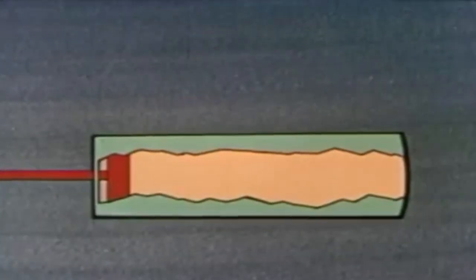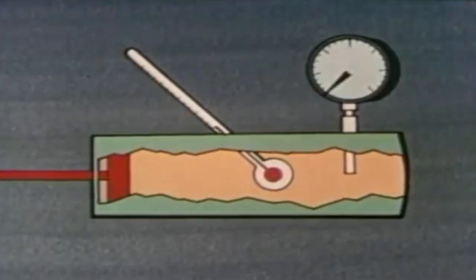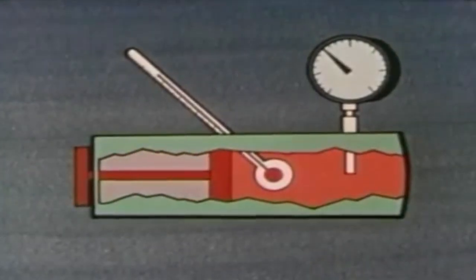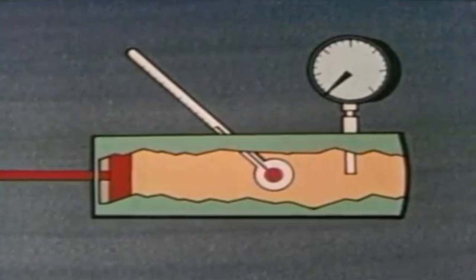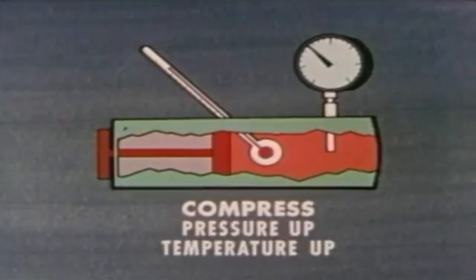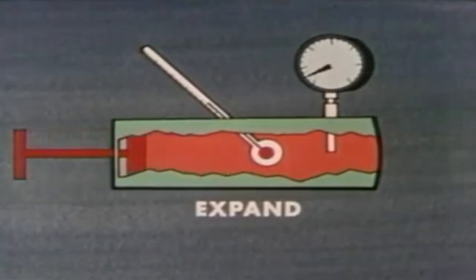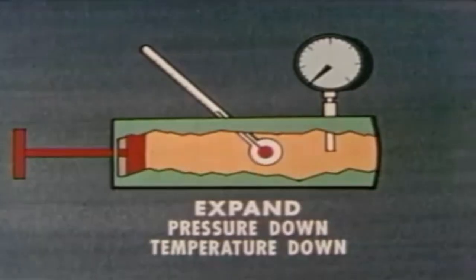Here's a container filled with gas. We add a thermometer to measure the temperature of the gas and a pressure gauge to measure its pressure. What happens if you push in on the piston? The pressure increases and the temperature increases. Now let the piston out — the pressure goes down and the temperature goes down. The rule is: when a gas is compressed, the pressure goes up and the temperature goes up. When a gas is allowed to expand, the pressure goes down and the temperature goes down. It's true for any gas.